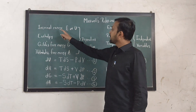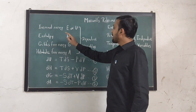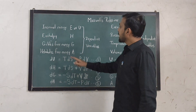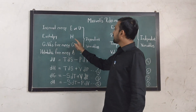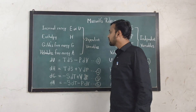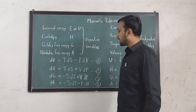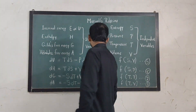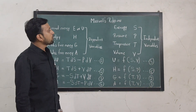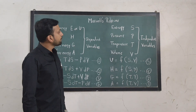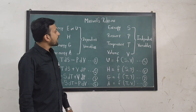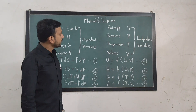The dependent variables are internal energy, abbreviated with the symbol E or U, enthalpy H, Gibbs free energy G, and Helmholtz free energy A. The independent variables are entropy S, pressure P, temperature T, and volume V.